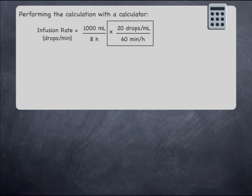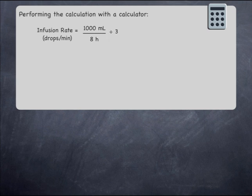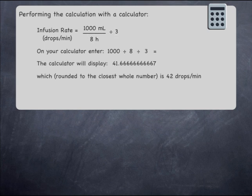As an alternative way of performing this calculation, if you go back to the formula at the beginning, you could have divided by 3 instead of having multiplied by 20 over 60. On your calculator, you would enter 1,000, divided by 8, divided by 3, and then press equals. The calculator will display the same answer, which, rounded to a whole number, is 42 drops per minute.